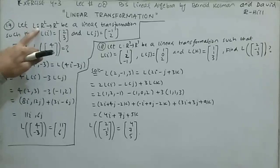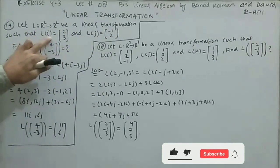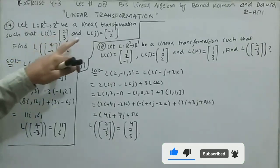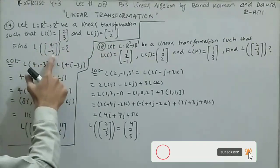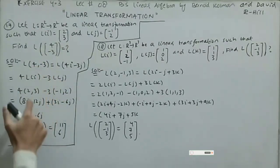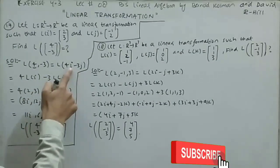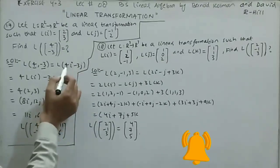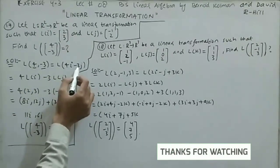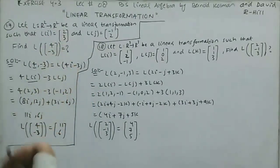Question 17: Let L be a linear transformation from R² to R² such that L(i) = (2,3) and L(j) = (-1,2). We need to find L(4,-3). We write L(4,-3) as L(4i - 3j), then take out 4 as a common factor giving 4·L(i), and take out -3 as a common factor giving -3·L(j).